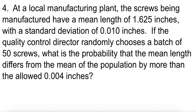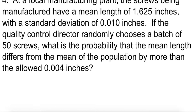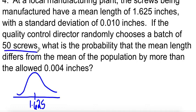I'm going to do this one straight on the calculator, but I do want to emphasize that you should draw the pictures even if you're just going straight to the calculator because it's going to give you a good idea of what to plug into the calculator. So drawing the picture, our screws are supposed to have a mean length of 1.625, and we choose a batch of 50 screws. So this is our sample, so we have a normal distribution. Our variance is smaller. Our standard deviation is smaller. We want to know what is the probability of the mean length differs from the mean of the population by more than the allowed 0.004.